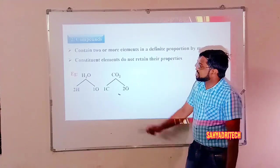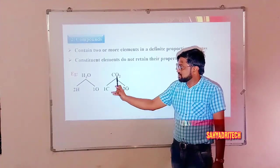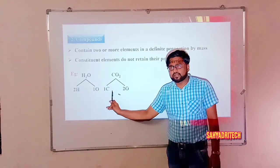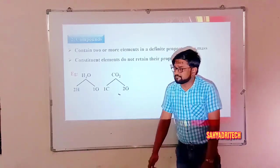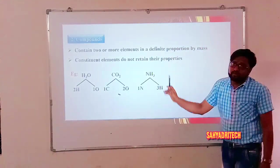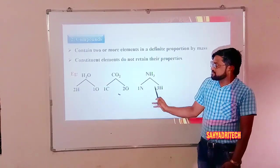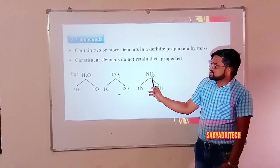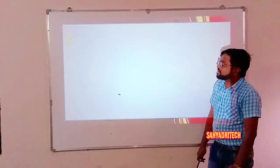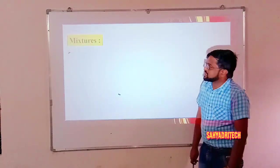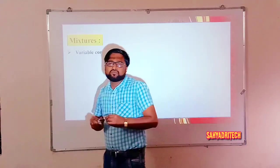Similarly, carbon dioxide consists of one carbon and two oxygen atoms. Ammonia molecule consists of one nitrogen and three hydrogen atoms, resulting in a compound called ammonia.